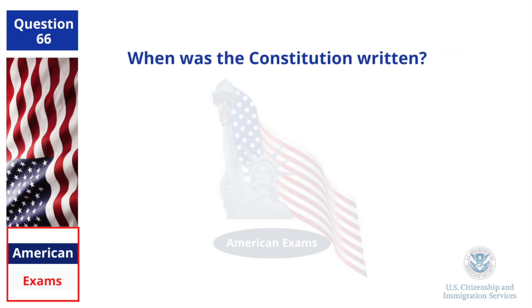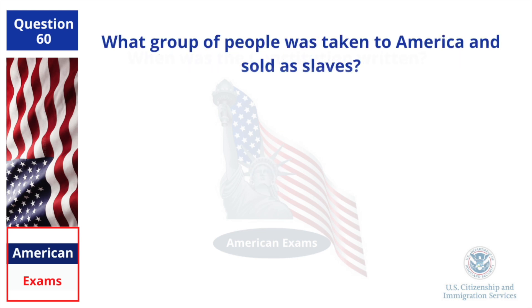When was the Constitution written? 1787. What group of people was taken to America and sold as slaves? Africans.